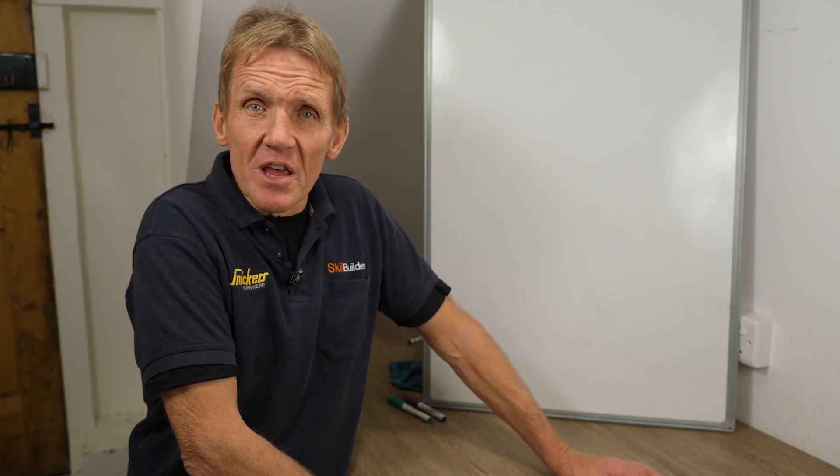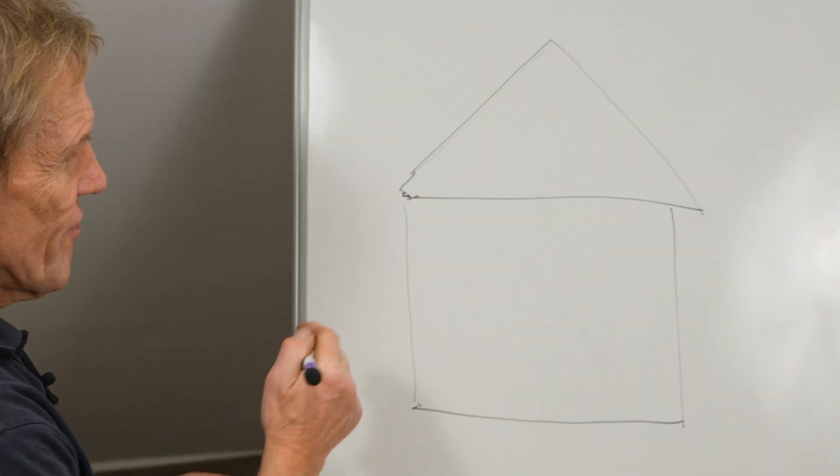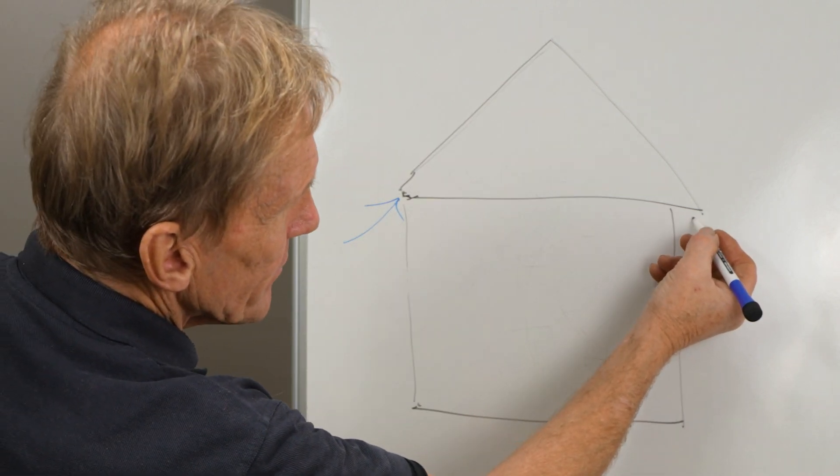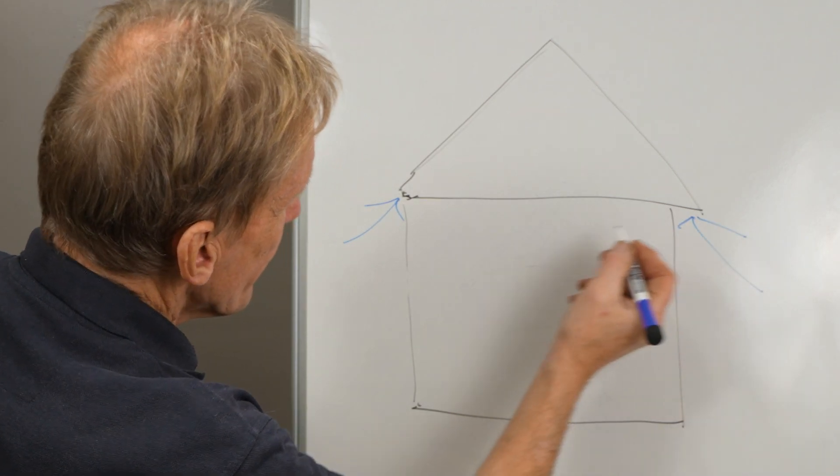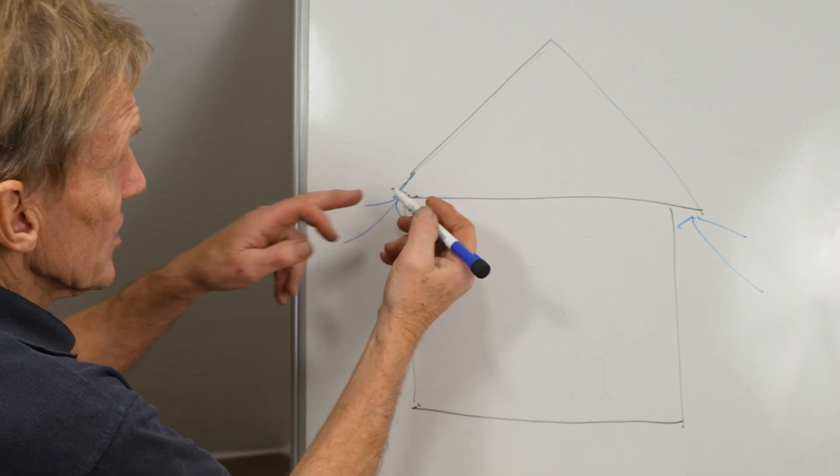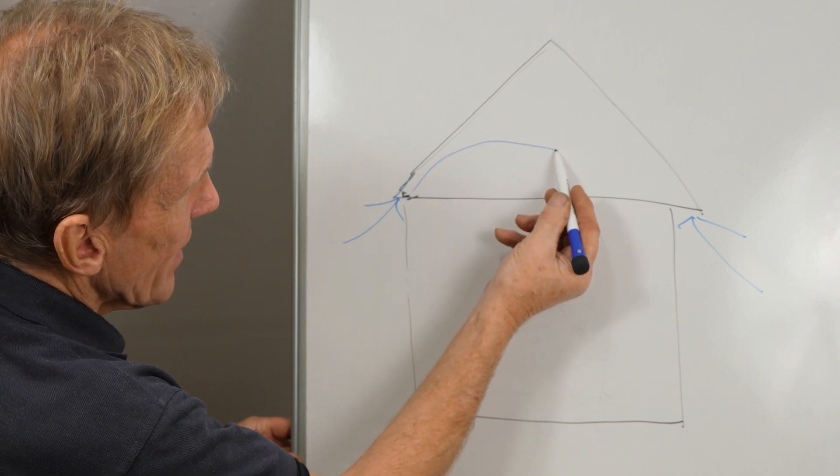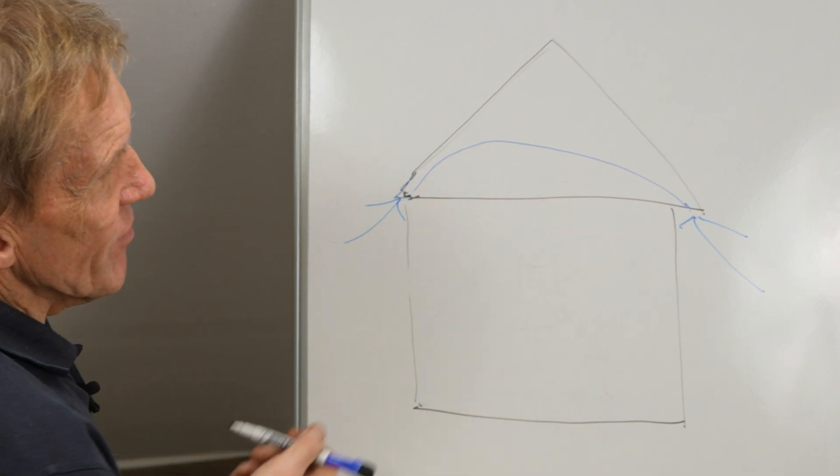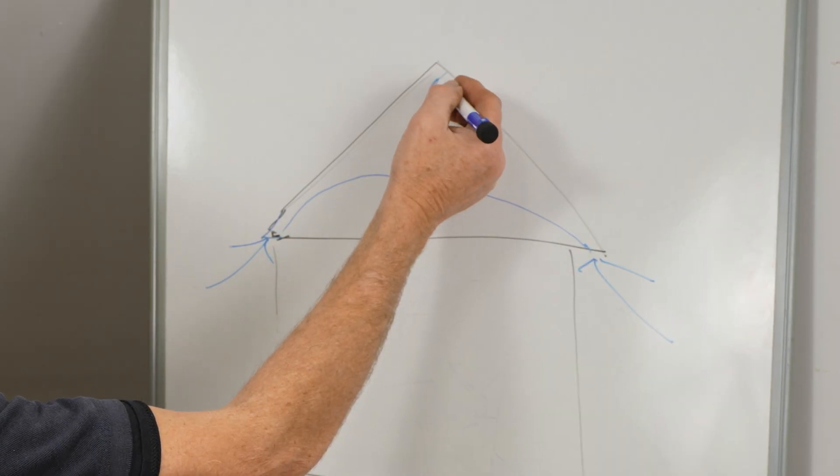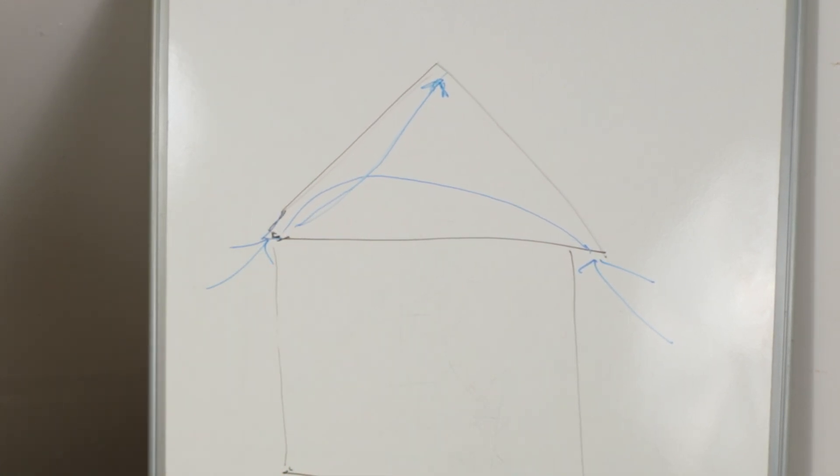We used to have ventilation into the eaves which would come in on both sides of the roof through either a continuous strip or some holes in the soffit. That ventilation would blow over the roof and hopefully find its way either out the other side or, if you've got ridge vents, up into the ridge, which is a far better arrangement than trying to get it to go back and over.